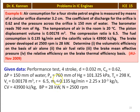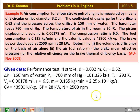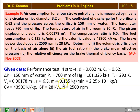Brake power at 2500 RPM is 28 kW. Determine: volumetric efficiency on the basis of air alone, air-fuel ratio, brake mean effective pressure, and relative efficiency on the brake thermal efficiency basis. Given data: 4-stroke cycle engine, orifice diameter = 0.032 m, C_D = 0.62, ΔP = 150 mm water, atmospheric pressure = 101.325 kPa, temperature = 293 K, stroke volume = 0.00178 m³, compression ratio = 6.5, fuel mass = 2.25×10⁻³ kg/s, calorific value = 43,900 kJ/kg, brake power = 28 kW, speed = 2500 RPM.